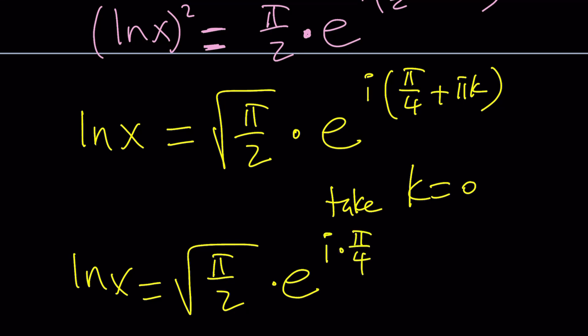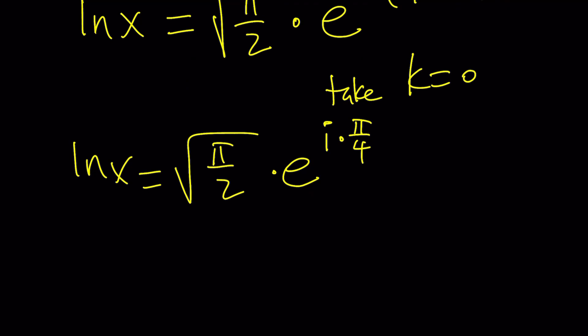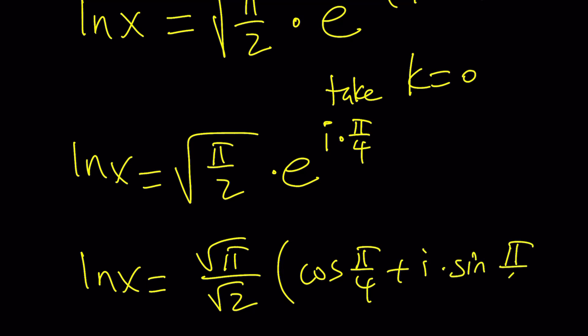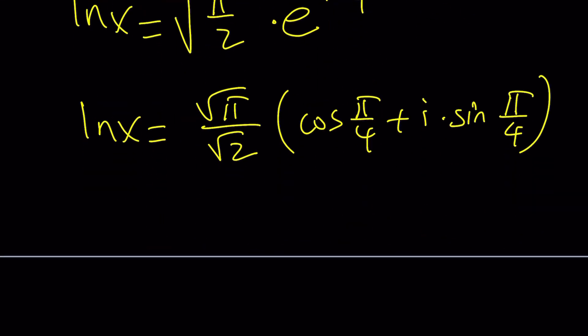We're going to replace e^(i·π/4) using Euler's formula as cosine(π/4) plus i·sine(π/4). I used Euler's formula backwards — made it look more complicated. We need to distribute. Cosine(π/4) is √2/2 and sine(π/4) is √2/2. So if we distribute that, we get ln x equals... and we can write sqrt(π/2) as √(2π)/2 by rationalizing the denominator.